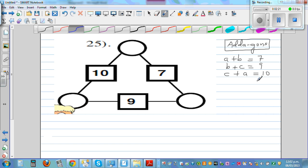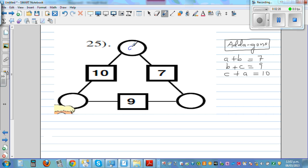So A plus B is 7. B plus C is 9. So let me say this is A. This is B. And this is C. So we have made 3 equations. A plus B is 7. B plus C is 9. C plus A is 10.